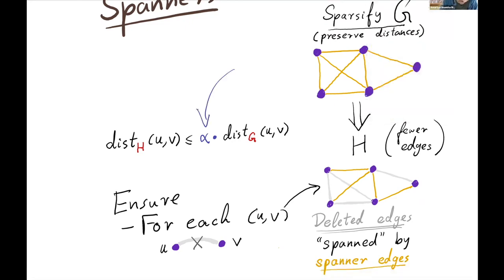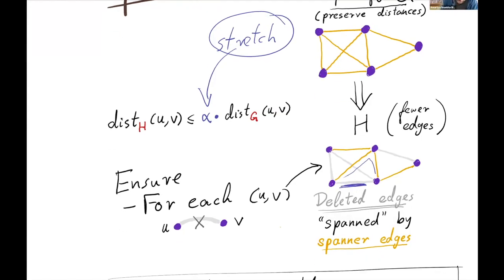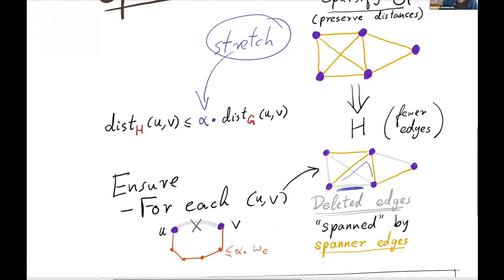One way to ensure that this inequality is satisfied for every deleted edge in H is to ensure that for every deleted edge — say uv is an edge being deleted — we have some auxiliary path between u and v that makes up for the fact that uv was deleted. Specifically, the weight of this path should be at most alpha times the weight of the original edge. So that's what a spanner is.